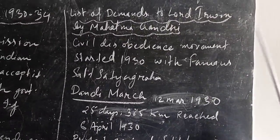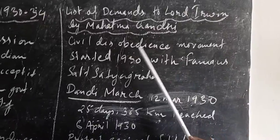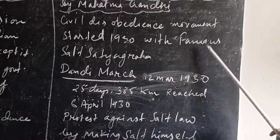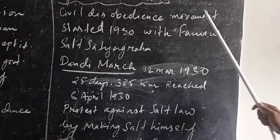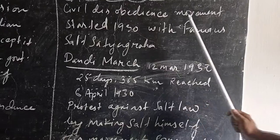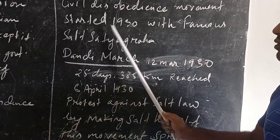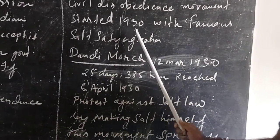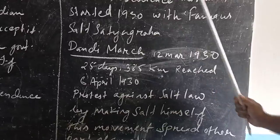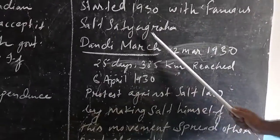If those demands were not fulfilled, Mahatma Gandhi would launch the Civil Disobedience Movement. That Civil Disobedience Movement was launched starting from 1930, beginning in Mumbai, with the famous Salt Satyagraha.